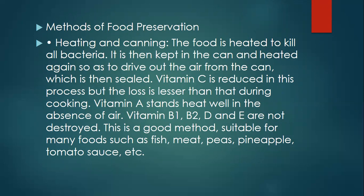Methods of food preservation. First, it is heating and canning. The food is heated to kill all bacteria. It is then kept in the can and heated again so as to drive out the air from the can, which is then sealed. Vitamin C is reduced in this process, but the loss is lesser than that during cooking.